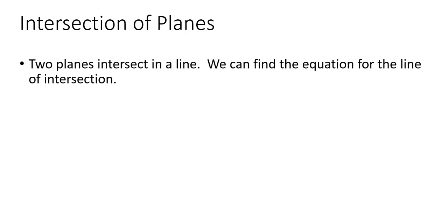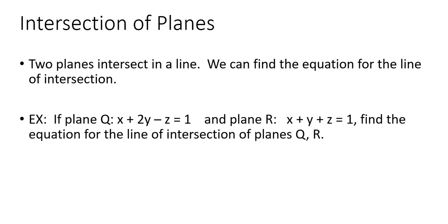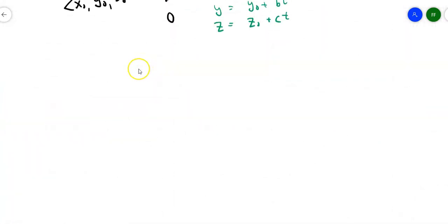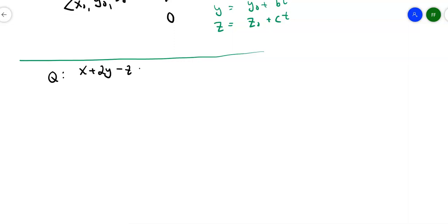If two planes intersect, they intersect in a line. Look around your house — the floor and wall intersect in a line, the wall and ceiling intersect in a line. So you can find the equation for that line of intersection. Plane Q has the equation x plus 2y minus z equals 1. Plane R has the equation x plus y plus z equals 1. I want the equation for the line of intersection of those two planes.